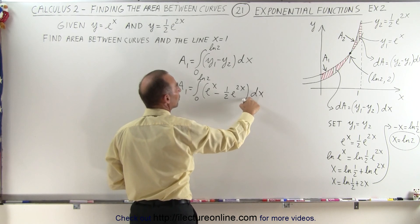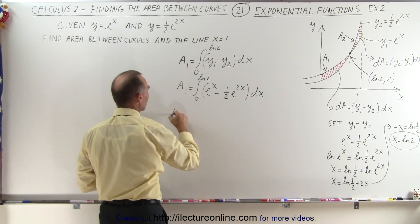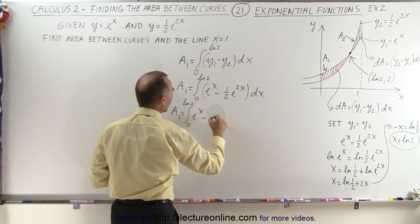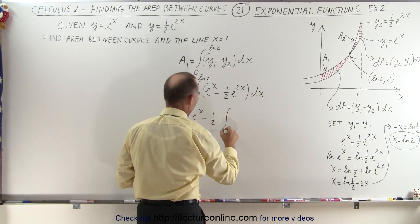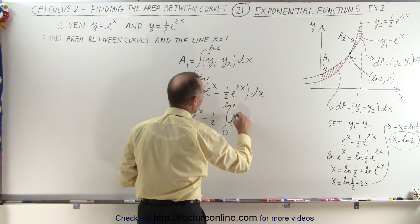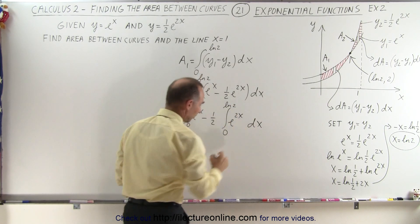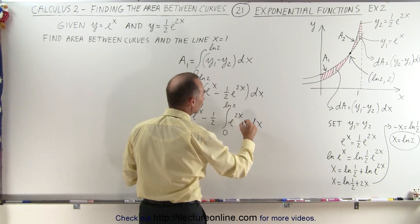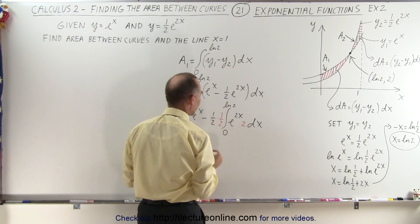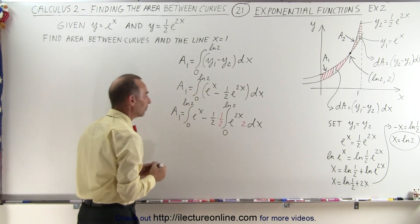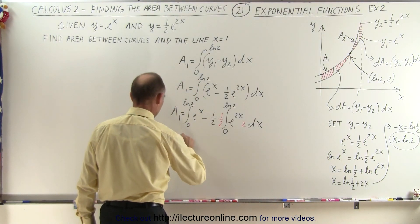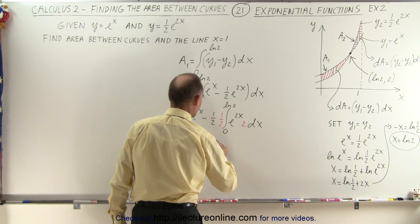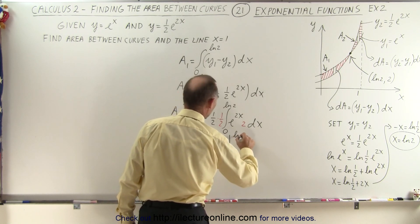A1 equals the integral from 0 to the natural log of 2 of e to the x minus 1 half e to the 2x times dx. We need the proper differential, so we write this as two separate integrals: the integral from 0 to ln2 of e to the x, minus 1 half times the integral from 0 to ln2 of e to the 2x dx. For e to the 2x we need a 2 dx, so we multiply by 1 half to compensate. Integrating gives e to the x minus 1 quarter e to the 2x.